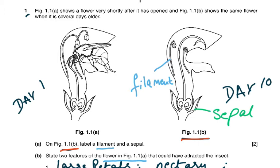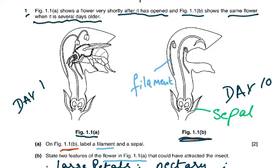Figure 1.1a shows a flower very shortly after it has opened and figure 1.1b shows the same flower when it is several days older. Look very carefully — these anthers are mature in figure 1.1a, and in figure 1.1b these anthers are all shriveled up.